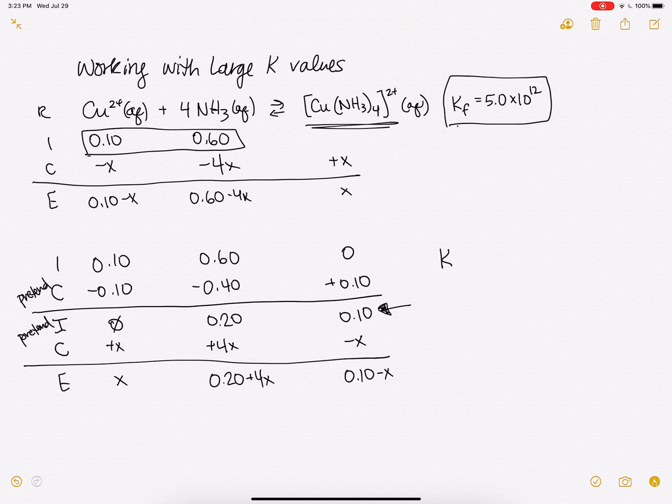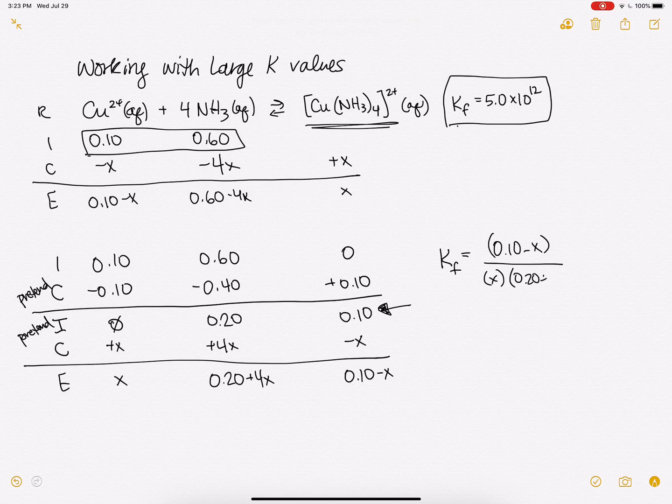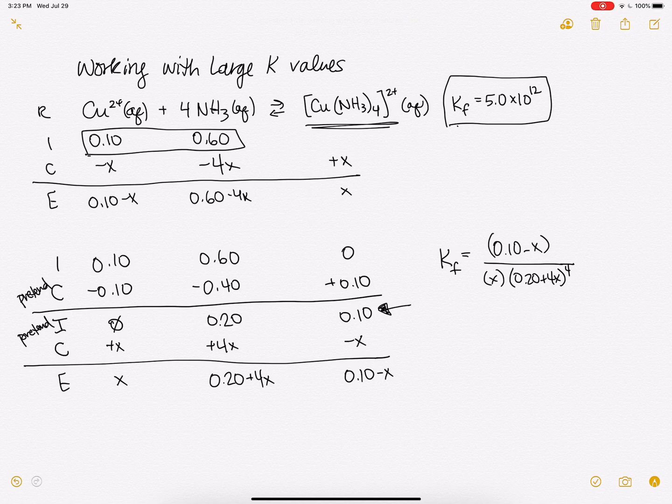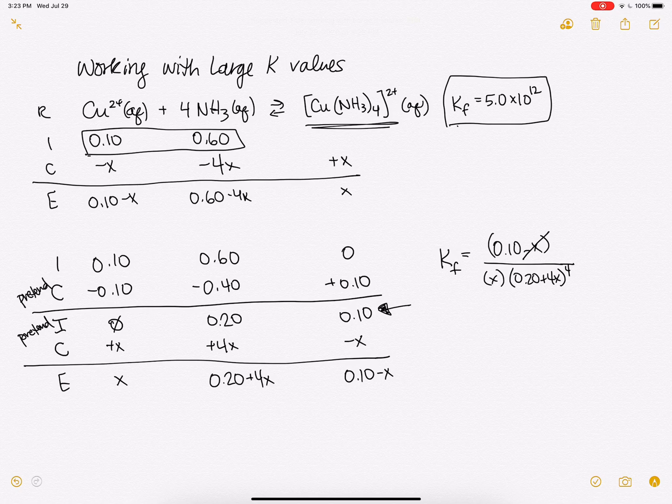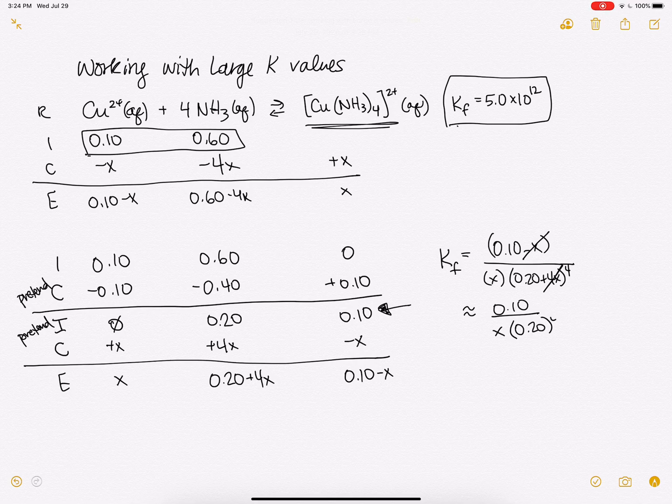So now, when we plug it into our KF expression, we'll get 0.1 minus X, X, 0.2 plus 4X to the fourth. And because we're using the small X approximation, this little guy is going to go away. And thankfully, this guy goes away and makes our life a lot easier. So we're going to approximate this is 0.1 over X times 0.2 to the fourth.